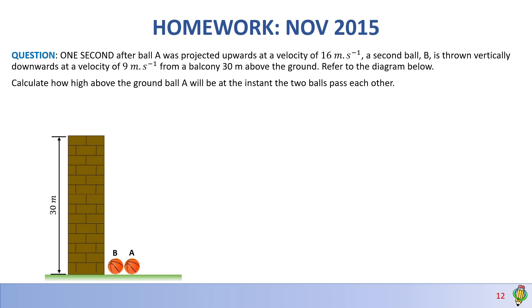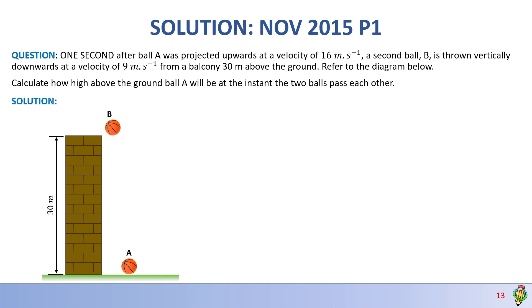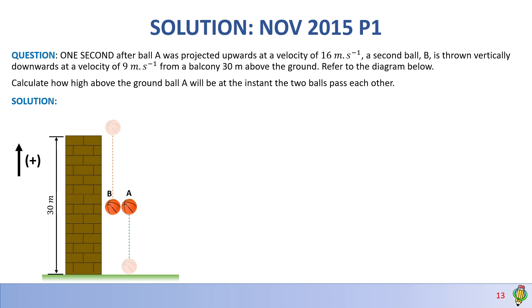Let's look at how we solve this question. The first thing you want to do is choose your direction before solving any physics question. In this case, I'll choose upwards as positive. We throw ball A and then ball B one second later — they meet at a certain point. I'll label the distance from the ground to that position as Y.